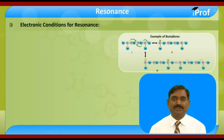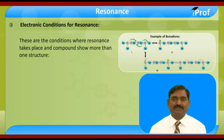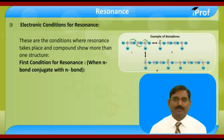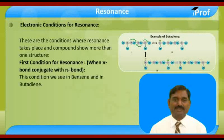Electronic conditions for resonance — these are conditions where resonance takes place and a compound has more than one structure. The first condition for resonance is when a pi bond coincides with a pi bond. We see this condition in benzene and in butadiene.